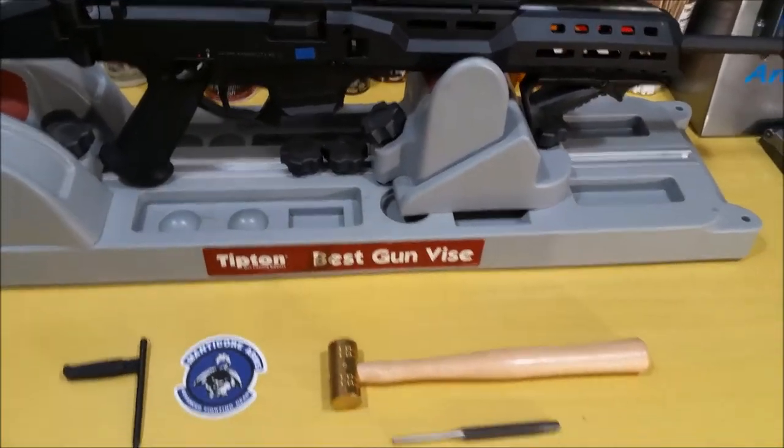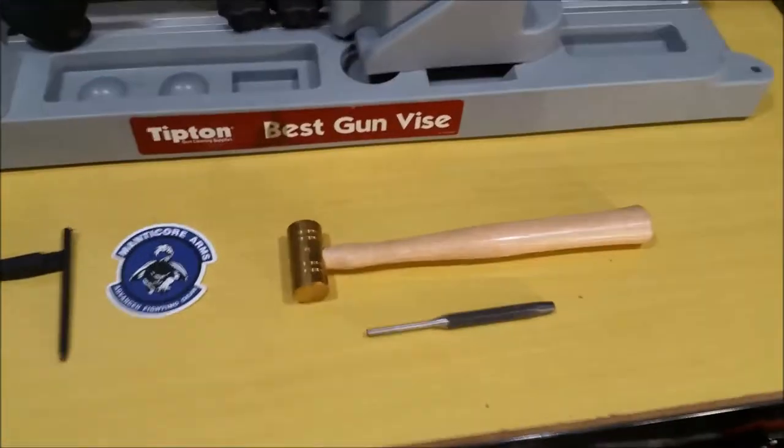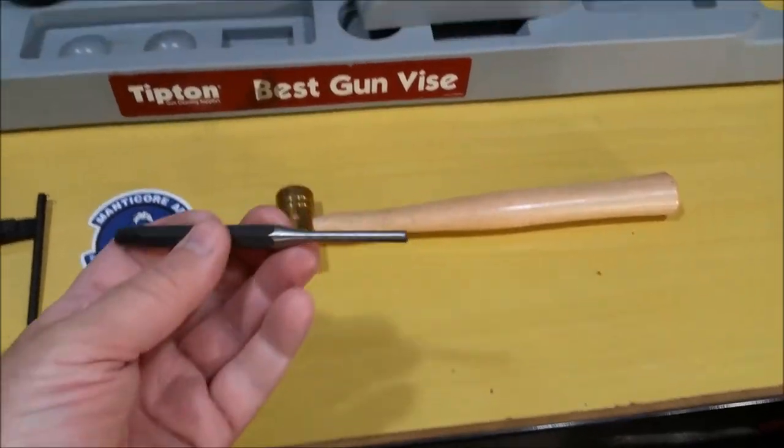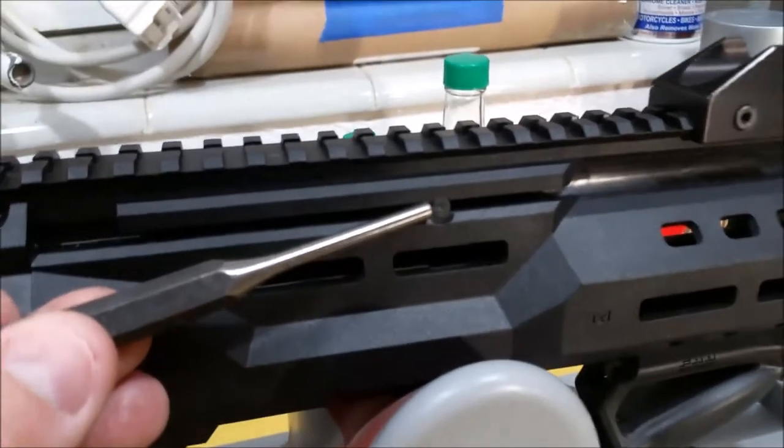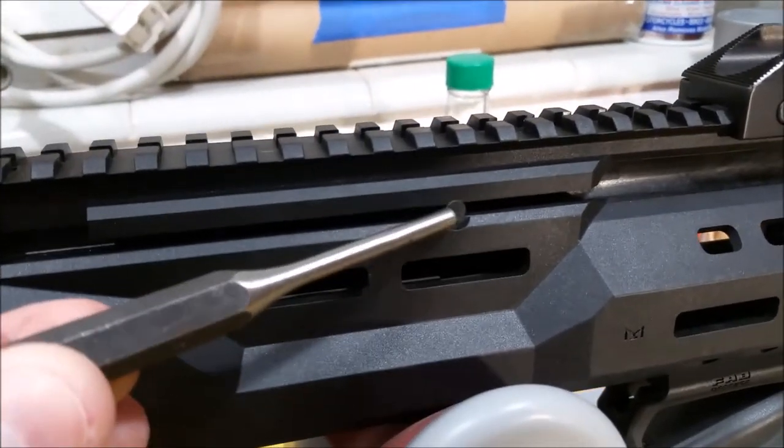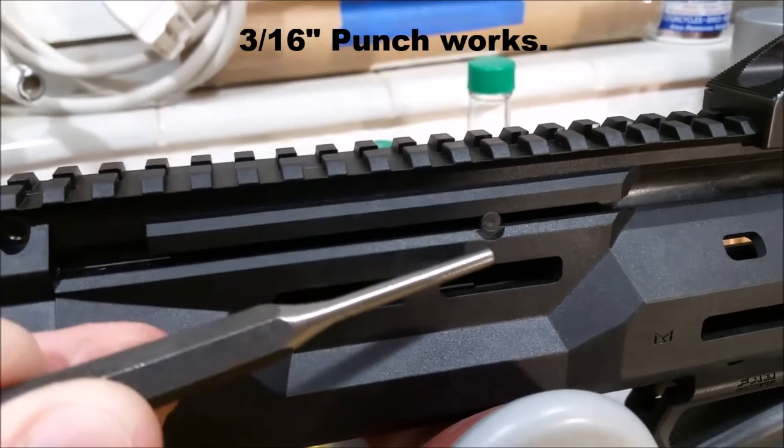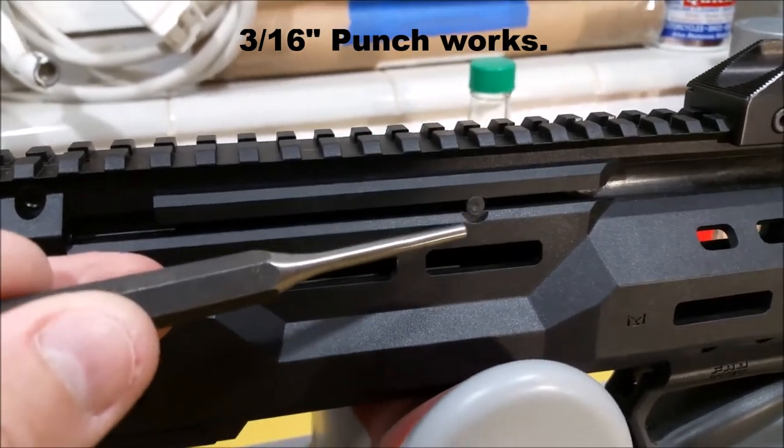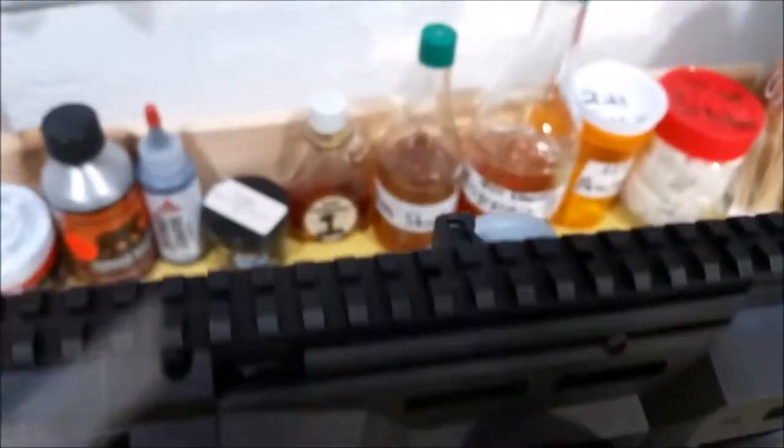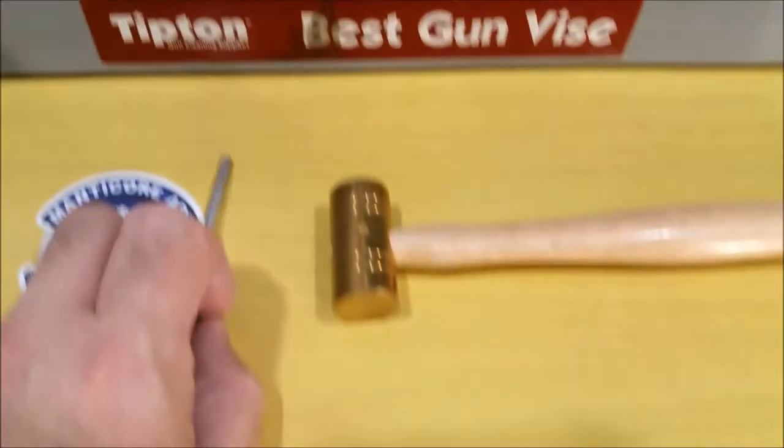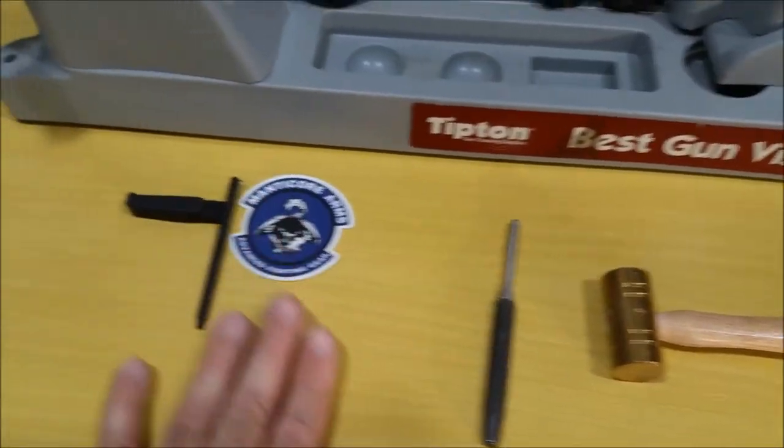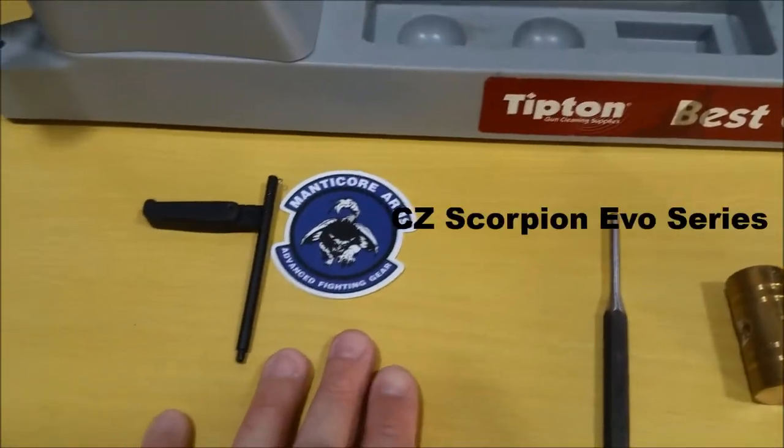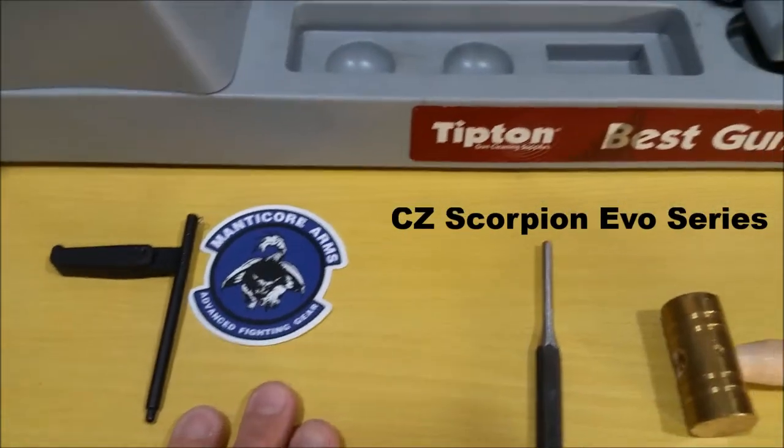Things we will need for this install will be a punch. What you want to do is find something that will match up to this hole or this piece of plastic because we have to punch this plastic out from the right side out to the left. To do that I have a small brass mallet and of course the handle. This should work with any install of any aftermarket charging handle.